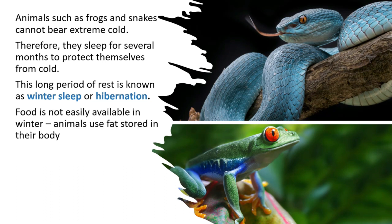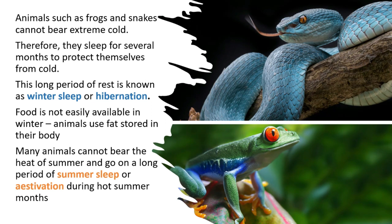Animals living in cold places save their energy by becoming inactive during the winter season. In many places, food is not easily available in winter. During this period, they use the fat stored in their body as food. Many animals cannot bear the heat of summer and go on a long period of summer sleep or estivation during hot summer months.